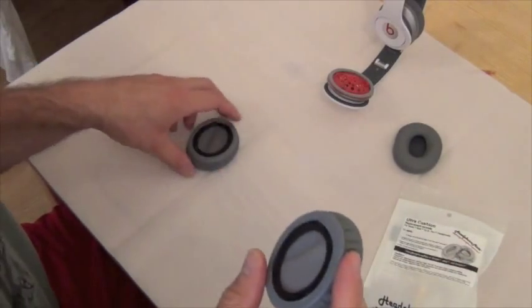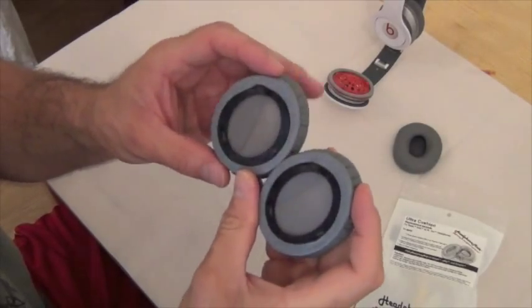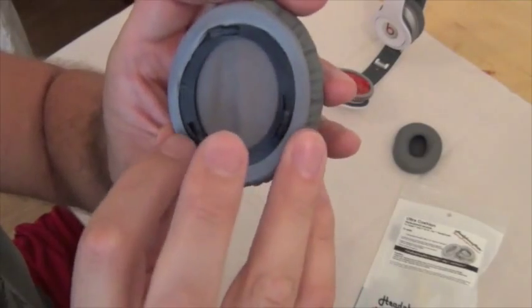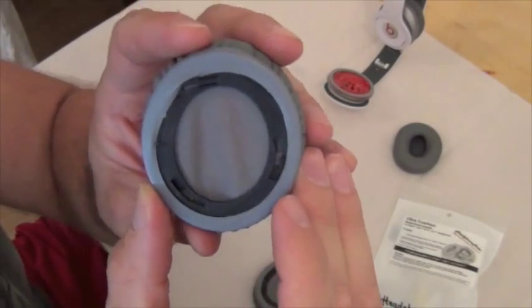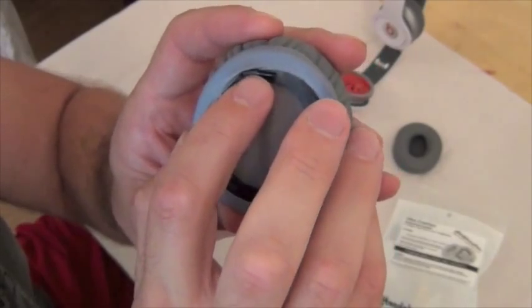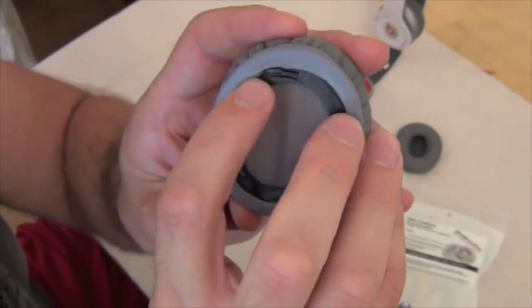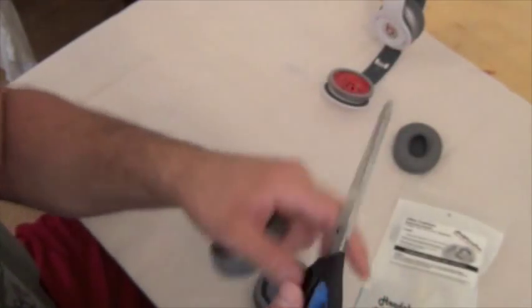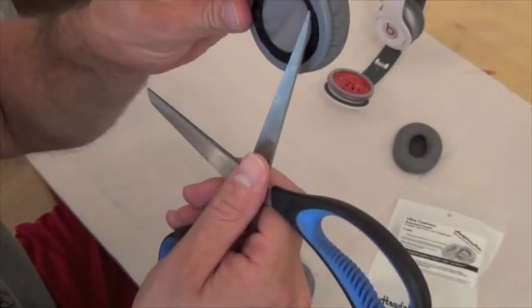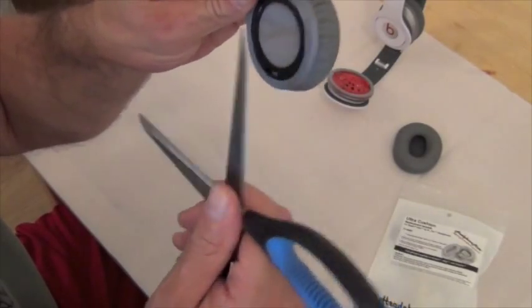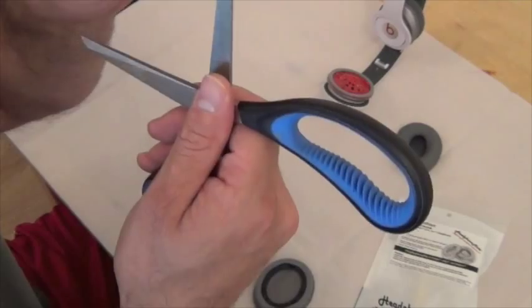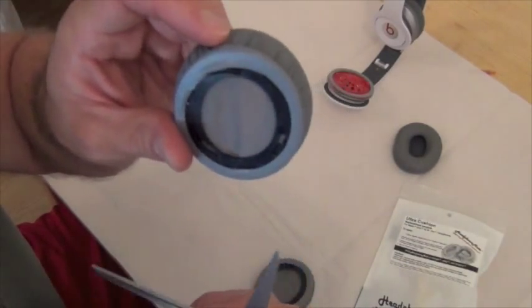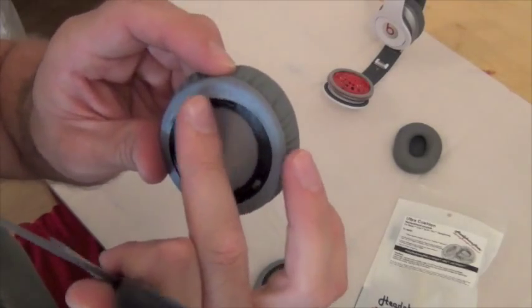Now the first thing you're going to do when you get our ear pads is you're going to look at the backs and you want to look at these clips. That's one clip, two, and three. Now the important thing here is if you see this clip you'll notice that there's part of the skirting here that's almost overlapping. So if I show you, lift it up a bit, it's actually sitting over top of the clip.